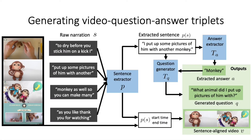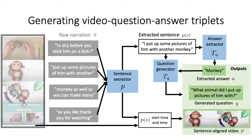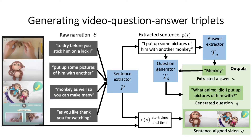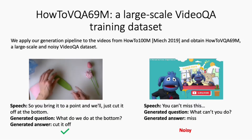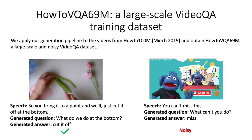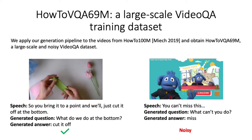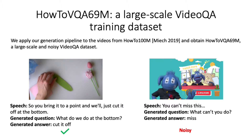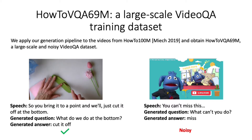In detail, our proposed pipeline takes as input narrated videos with readily available speech transcripts and automatically outputs video clip question-answer triplets. Applying our pipeline to the videos from the HowTo100M dataset, we generate a new dataset, HowToVQA69M, consisting of 69 million video clip question-answer triplets.